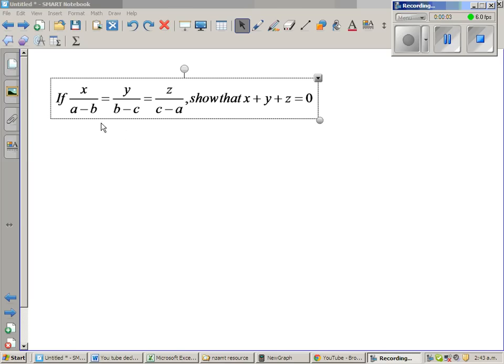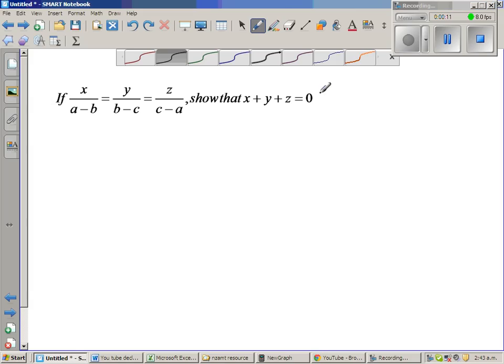If x over a minus b is equal to y over b minus c is equal to z over c minus a, show that x plus y plus z is equal to 0.